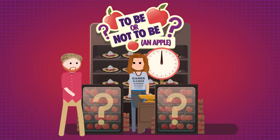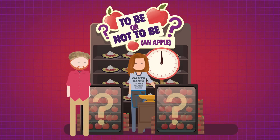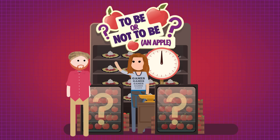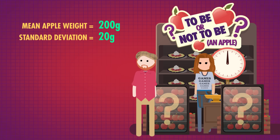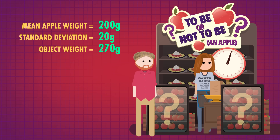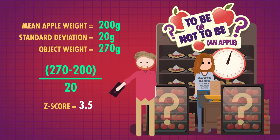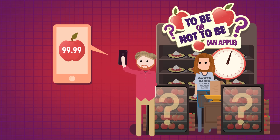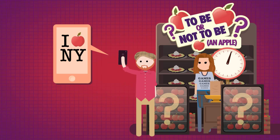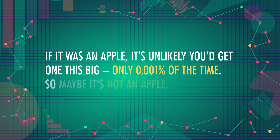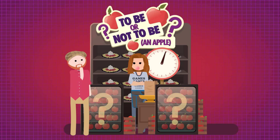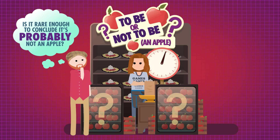Let's go to the Thought Bubble. You're at the county fair and stop at a game booth. The woman running it says she has two piles: one of apples and one of some type of mystery object. She'll randomly pick an item from one pile — if you can guess whether she picked an apple or not, you'll win a lifetime supply of funnel cake. She kindly tells you that the mean weight of this type of apple is 200 grams, with a standard deviation of 20 grams. She grabs an object, weighs it, and yells out the weight of 270 grams. You quickly calculate the z-score is 3.5, take out your phone, pull up a z-score table, and figure out this object would be in the top 99.99th percentile, meaning it is larger than 99.99% of apples. It's such a big apple, it's basically New York. If it was an apple, it's unlikely you'd get one this big — only 0.001% of the time. So maybe it's not an apple. Before you give your final answer, you need to ask yourself whether you think that's rare enough to conclude that it's probably not an apple.